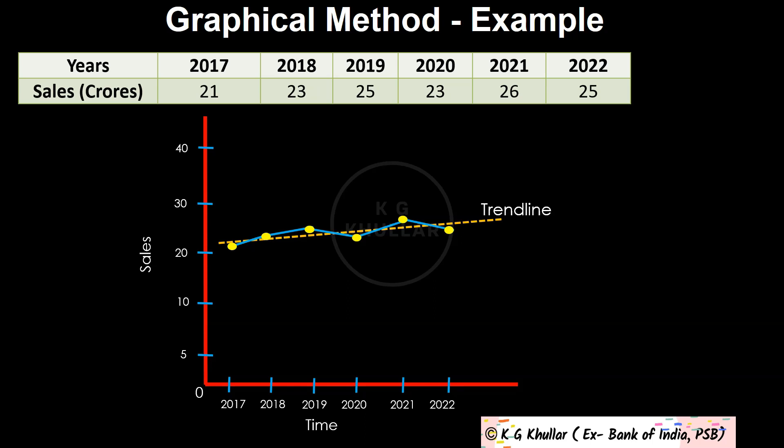While drawing this curve, please keep in mind that the curve should be smooth, and the number of points above the trend line should be more or less equal to the number of points below the trend line. I hope this very important point is clear. I will now summarise this method in steps.